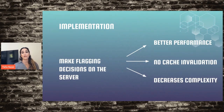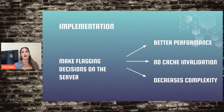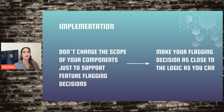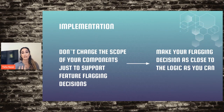It's also a good idea to move your flagging decisions to the server side rather than the client side. Since single page applications already make a server-side call to render UI data, you can call a feature flag service at the same time, fetching all flag evaluations with the server-side data. Keeping decisions on the server helps reduce caching and validation challenges, and significantly decreases complexity. Also, don't change the scope of components just to support flagging decisions — keep decisions as close to the logic as possible.